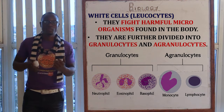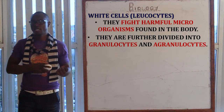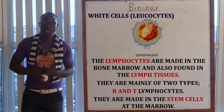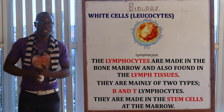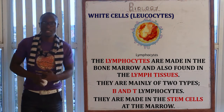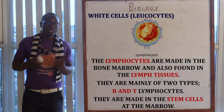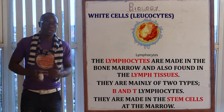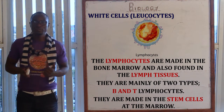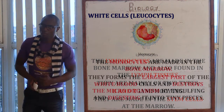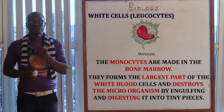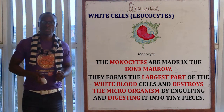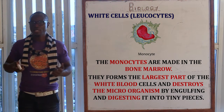The agranulocytes comprise the monocytes and the lymphocytes. The lymphocytes are made in the bone marrow and are also found in the lymphatic tissues. They are mainly of two types: the B and the T lymphocytes, and they are made in the stem cells at the bone marrow. The monocytes are also made in the bone marrow and form the largest part of the white blood cell.